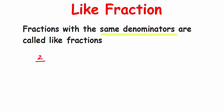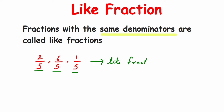Let me take an example. Suppose I have 2/5, and one more: 6/5. You can see the denominators are the same. I'll take one more fraction: 1/5. Again, denominators are the same. We are not looking at the numerators — just the denominators. Since they are the same, these are called like fractions.